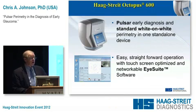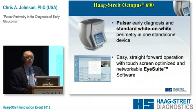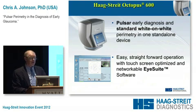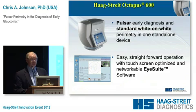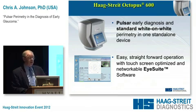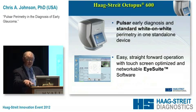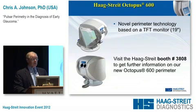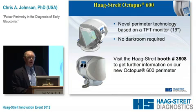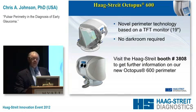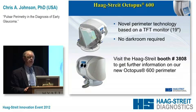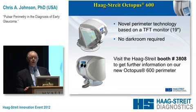This is the Pulsar Perimeter, and as you can see, it is quite compact in size with very nice operation. We have one of the Octopus 600s with Pulsar Perimetry that we are currently doing evaluations with. It has a very unique design and uses tendency-oriented perimetry—the TOP strategy—to perform threshold testing.